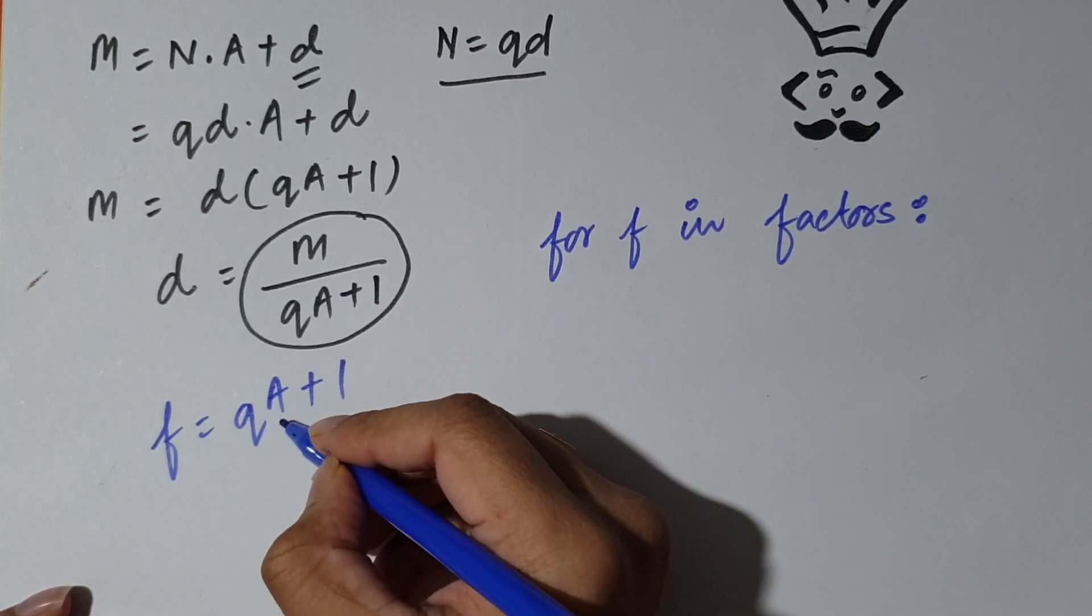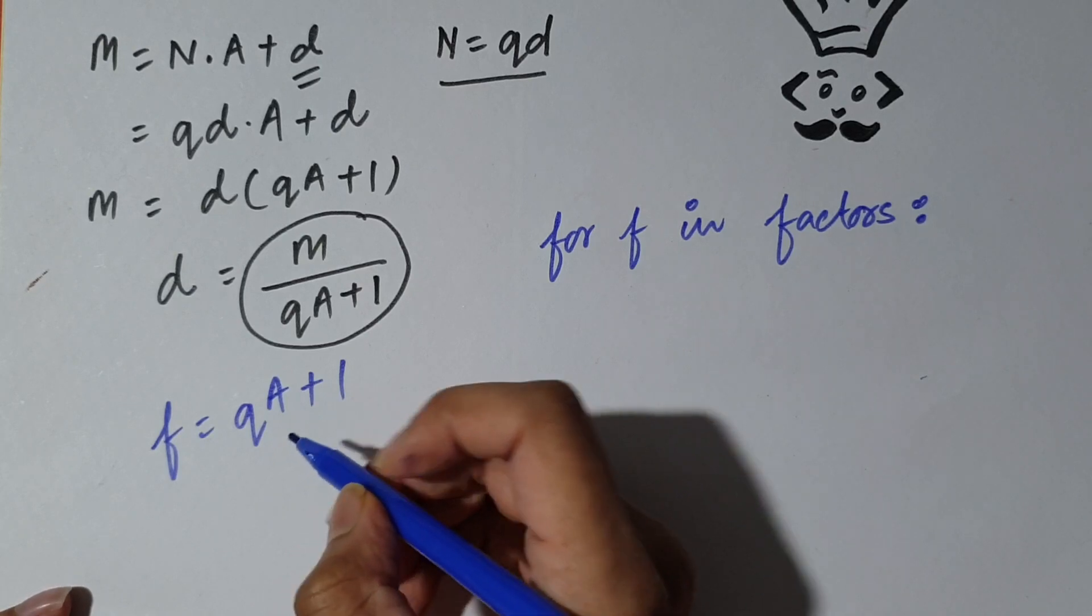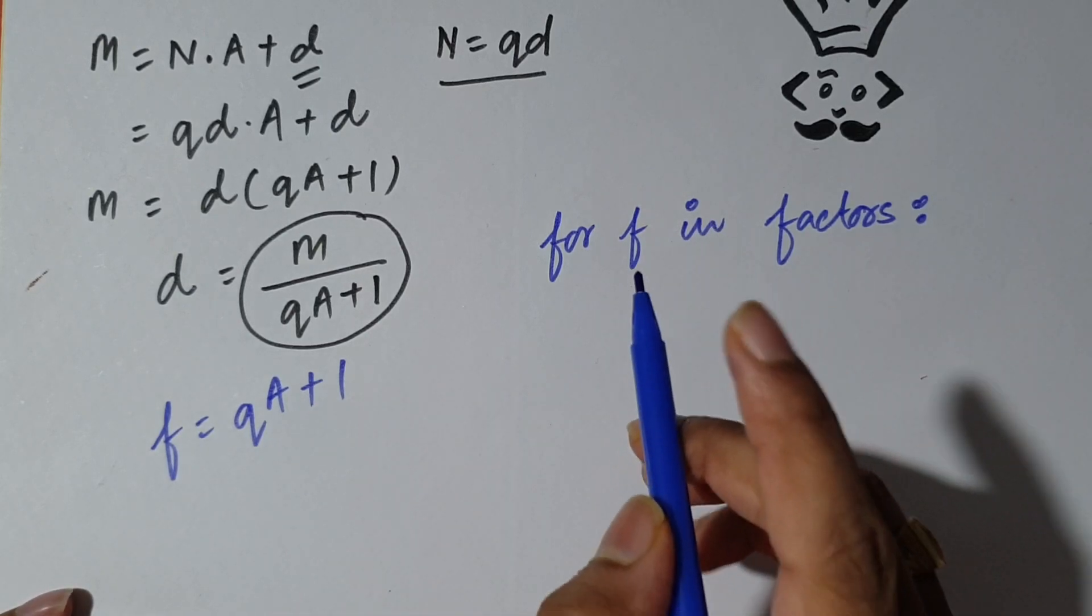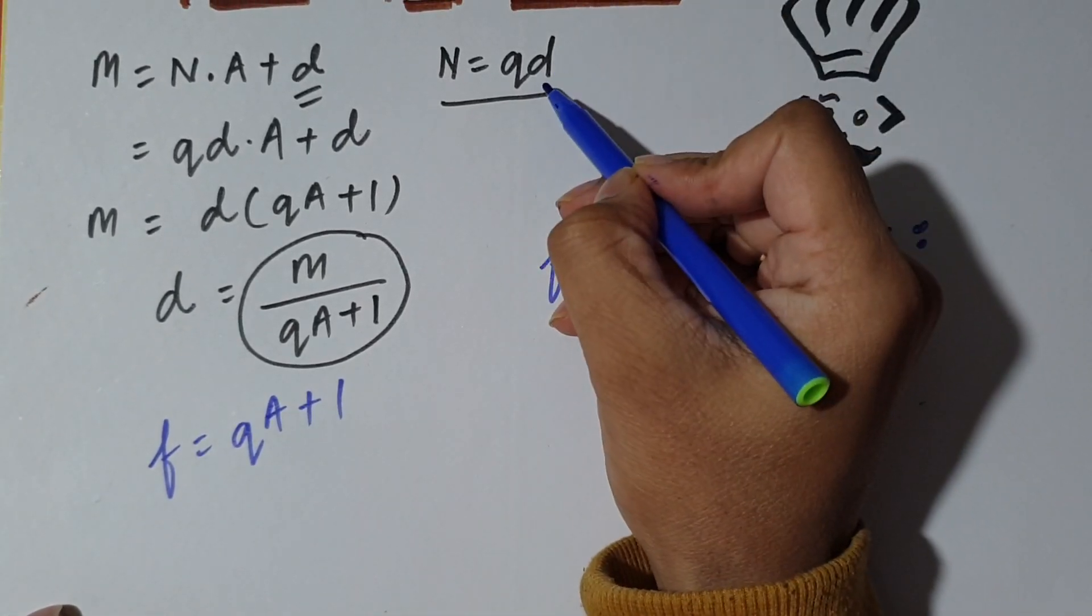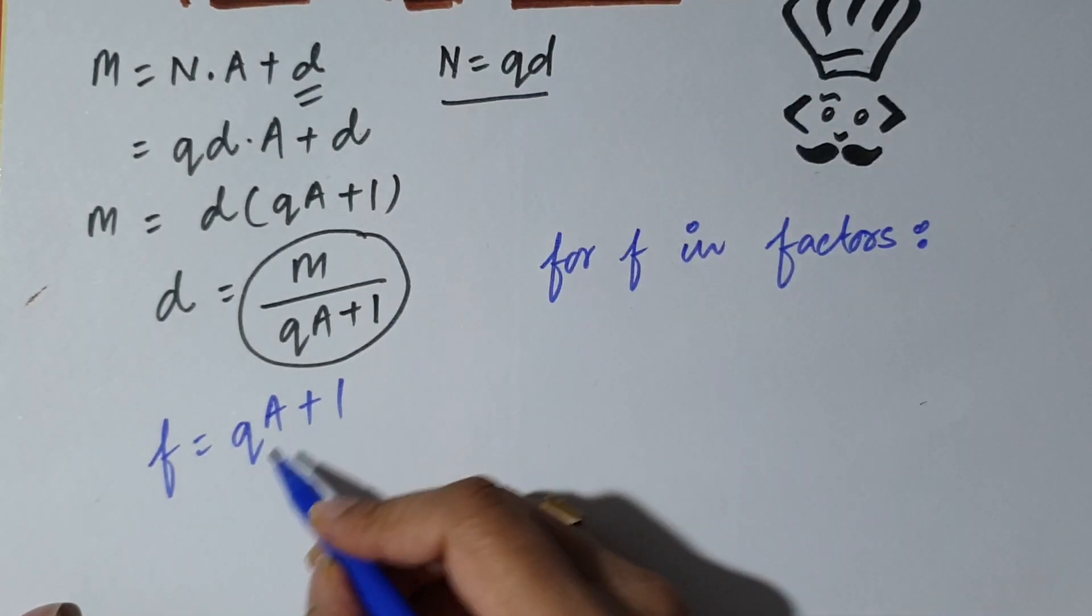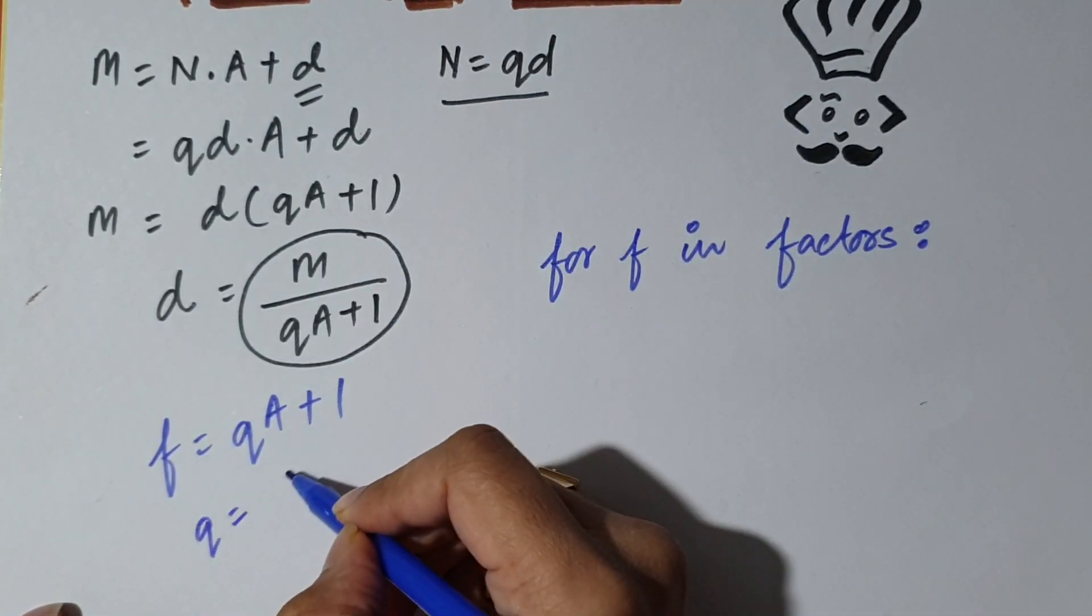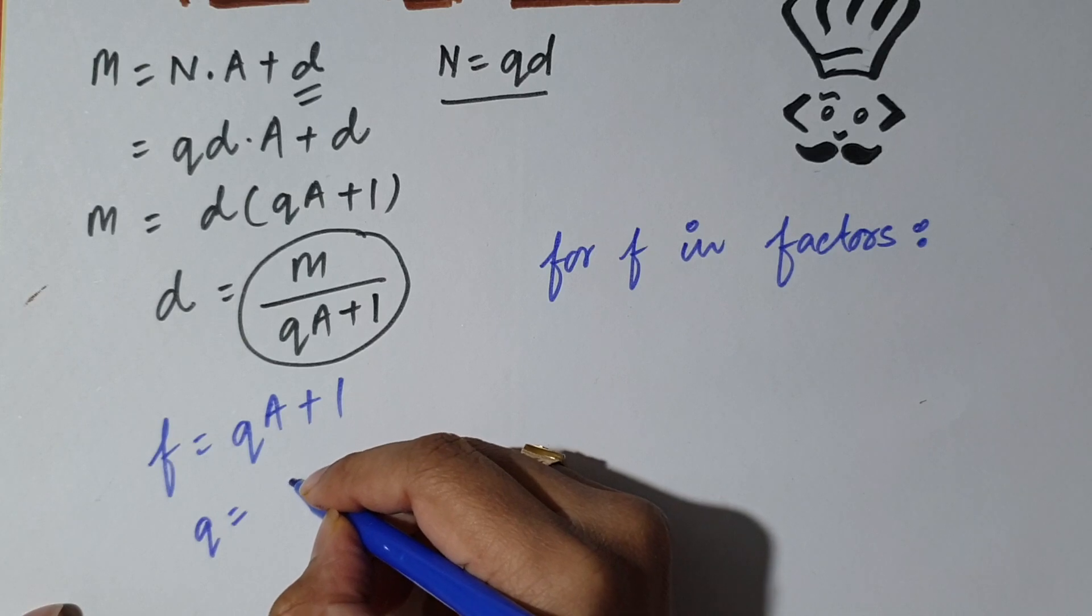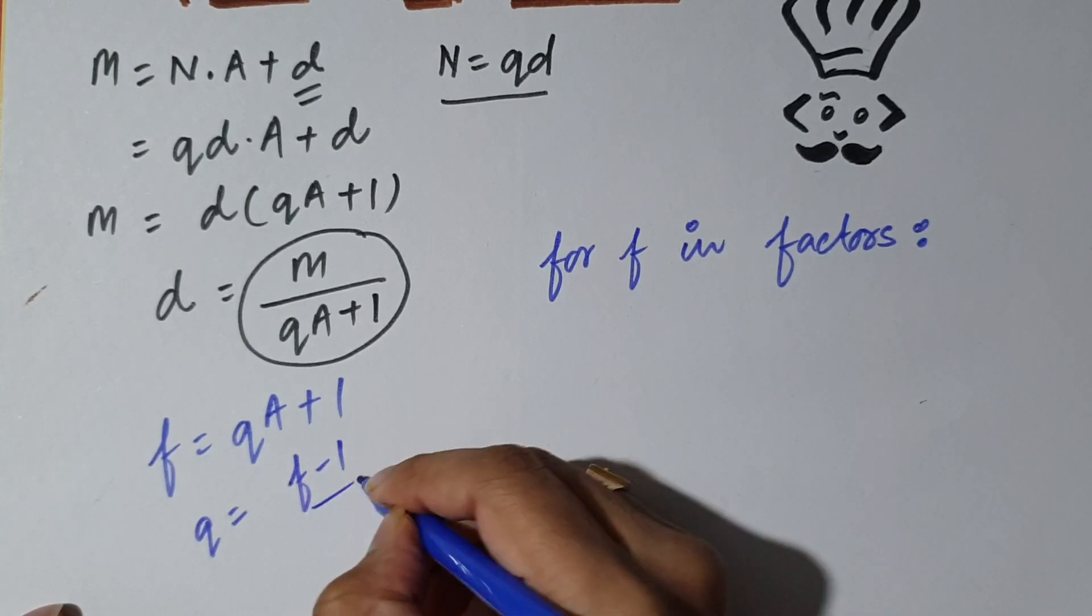Now we know A. And one thing more that you need to observe is that d is an integer, so Q is also an integer. So again, we can write that Q equals F minus 1 divided by A.